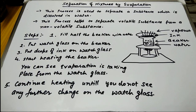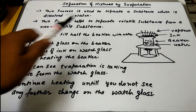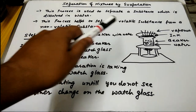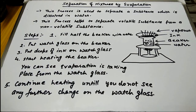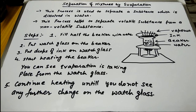What are volatile substances? Those which are directly converted into gaseous form without first being converted from solid to liquid form are considered volatile substances. And those volatile substances can be separated from non-volatile substances with the help of evaporation.